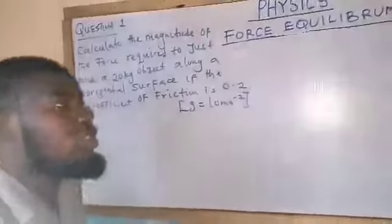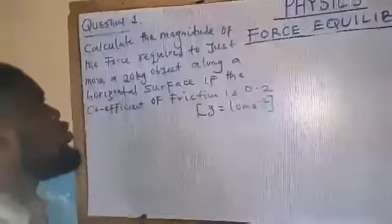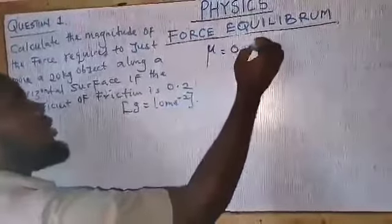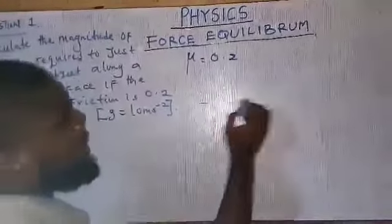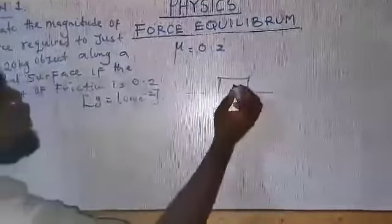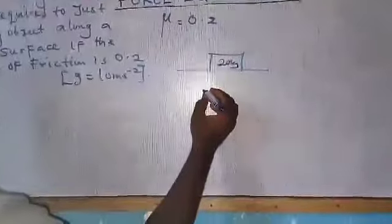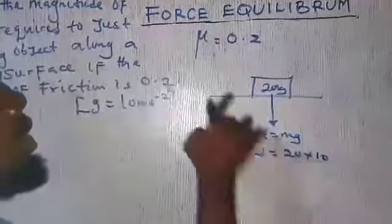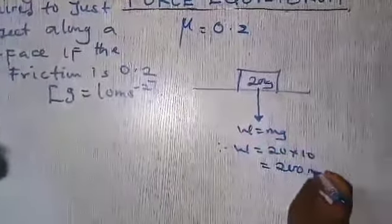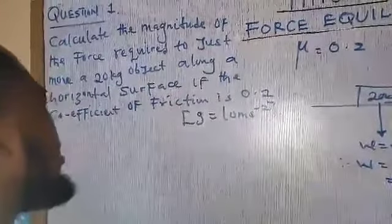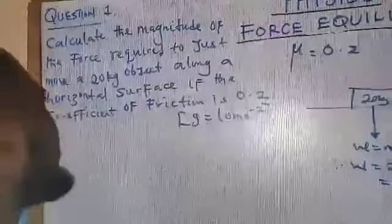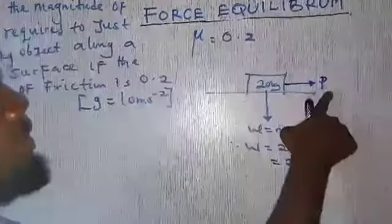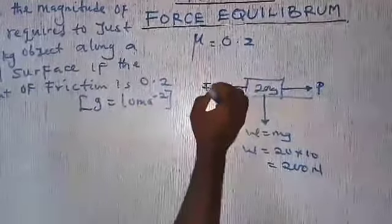Now let's look at a question to illustrate the point. The question says: calculate the magnitude of the force required just to move a 20 kg object along a horizontal surface if the coefficient of friction is 0.2. The first thing I will do is draw my diagram. The object is 20 kg. The weight acting downward equals Mg, so W equals 20 times 10 equals 200 N.